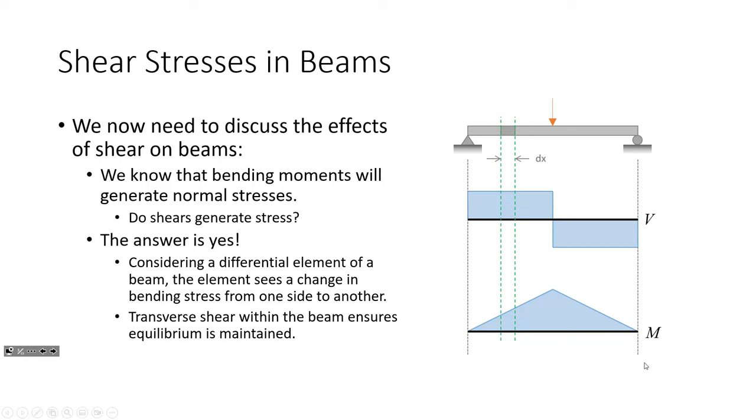From here to here, we have a constant shear, and here to here, we have a constant shear. And really, the only difference is just the sign change. So, we know that bending moments generate bending stresses, right? We can compute sigma equals MY over I. So, we get bending stresses from bending moments. Do we get shear stresses from shears? The answer is yes. We do get shear stresses as well.